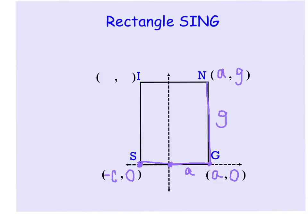And then finally for point I, you're going to the left C, so the X value is negative C. And then you're going up the same distance as you did here, so this would be G.